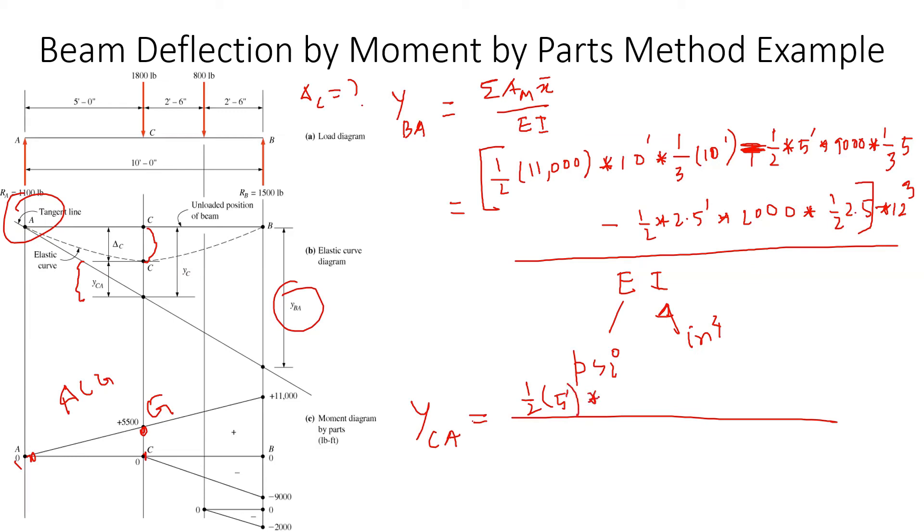So it's half times the base which is 5 feet times 5,555 pound-feet times the x-bar. Once again, this x-bar is from C, not from A, so that's going to be one-third of 5 feet. And all of these, because foot-foot-foot, to convert it to inches it's going to be 12 cubed divided by EI if E and I are in regular psi and inches to the fourth power.